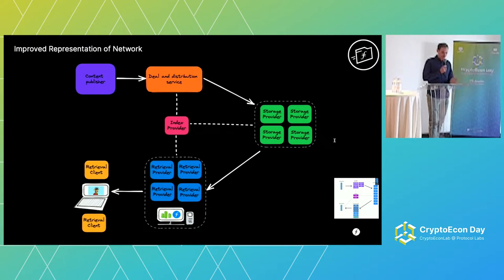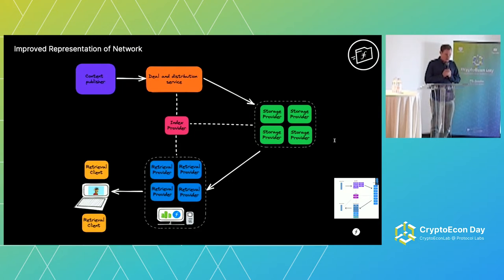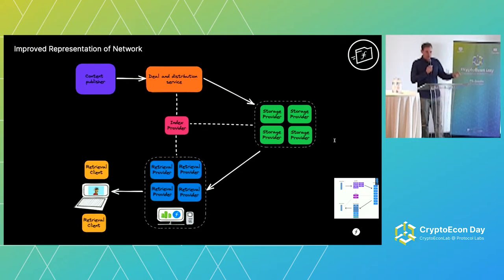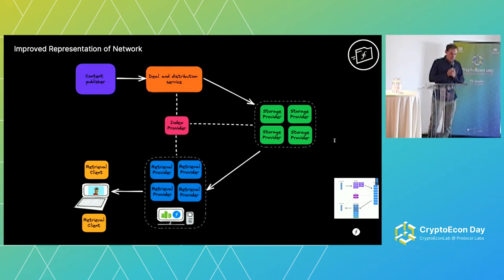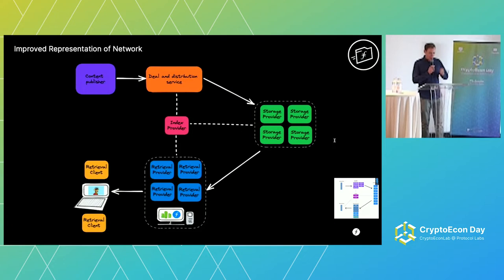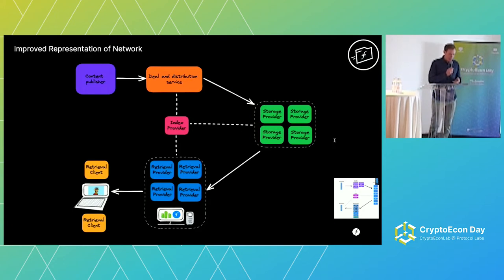Then we've got the retrieval flow. Down bottom left in yellow, we've got the retrieval clients who are looking to fetch stuff into their browsers, game consoles, or video streaming platforms. They want to talk to retrieval providers to have a really good experience retrieving that data. The retrieval providers hopefully have it stored in their cache, and if not, they can cache-miss to a storage provider and look up where it is from the indexer nodes. This is a representation of the storage and retrieval of the Filecoin network.